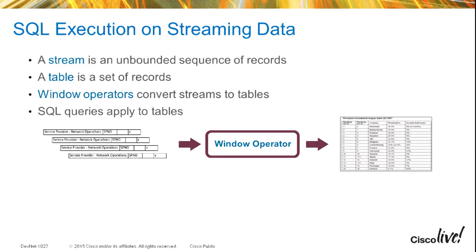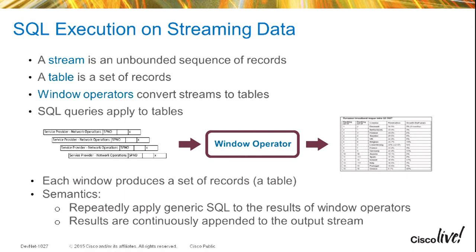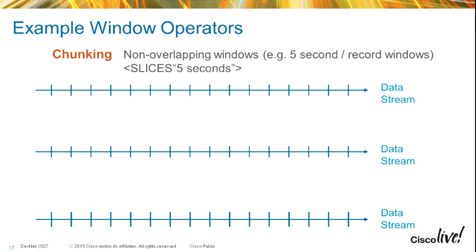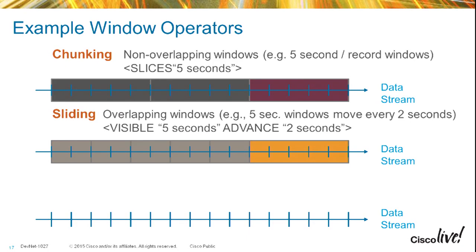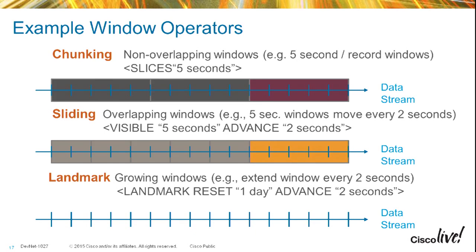This is the streaming data I talked about before. We can specify window operators to look at specified time intervals, hop over time intervals, and so forth. Each window produces a set of records as a table. We can repeatedly apply SQL results to window operators over a specified time interval, helping us filter and grab specific chunks of data. Here's an example: five-second record windows sliced every five seconds, a sliding window visible every five seconds advanced two seconds, and a landmark window that can be set to expire after a day or two.